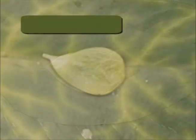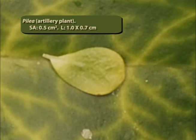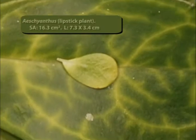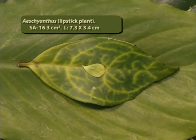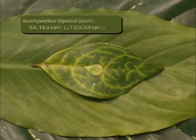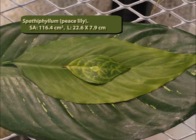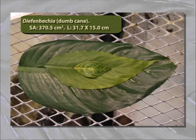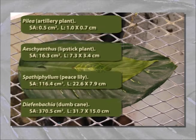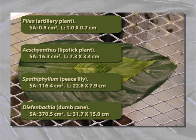We'll look at four leaves that differ substantially in size. The smallest is from Pilea, the artillery plant, so named because of its habit of forcefully shooting seeds from its flowers. Then Escianthus, named the lipstick plant because of its tubular red flowers. Spathophyllum, commonly known as the peace lily. And Diefenbachia, also known as dumb cane, because ingesting the sap causes intense pain and swelling of the tongue, rendering the victim unable to speak. They're all roughly the same shape, and their surface areas span about three orders of magnitude. The Diefenbachia leaf is about 30 times longer than the Pilea leaf.